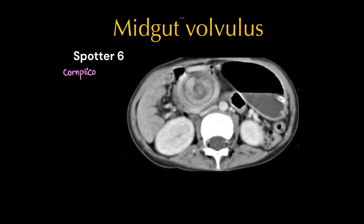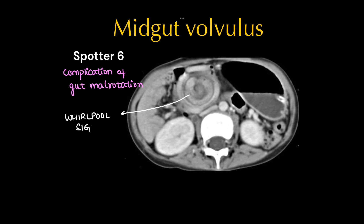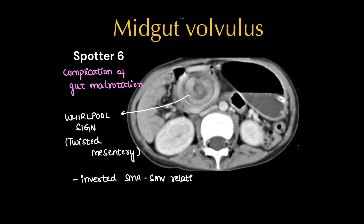This was a case of midgut volvulus. Here we can see the whirlpool appearance of bowel loops. This is a complication of gut malrotation, so look for the signs of gut malrotation too. The whirlpool sign is because of twisted mesentery and bowel loops. Along with it, inverted SMA and SMV can be seen because of malrotation.